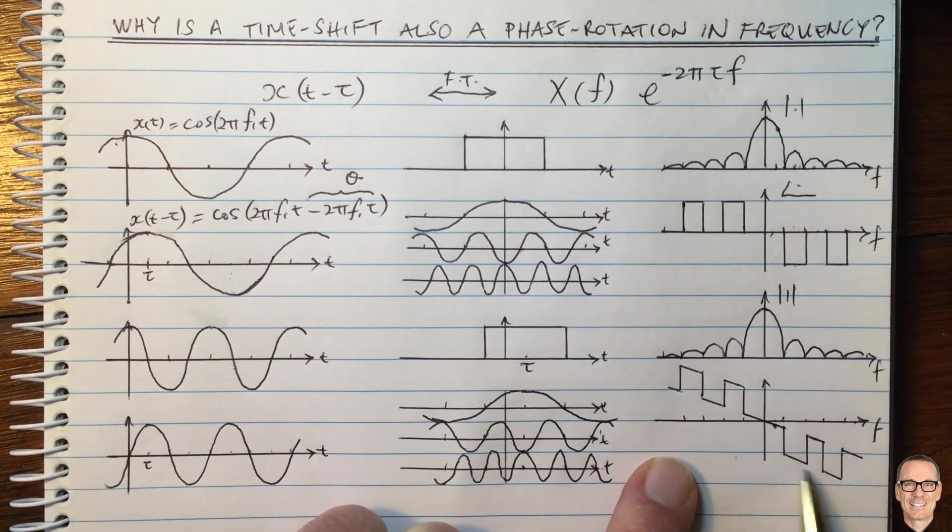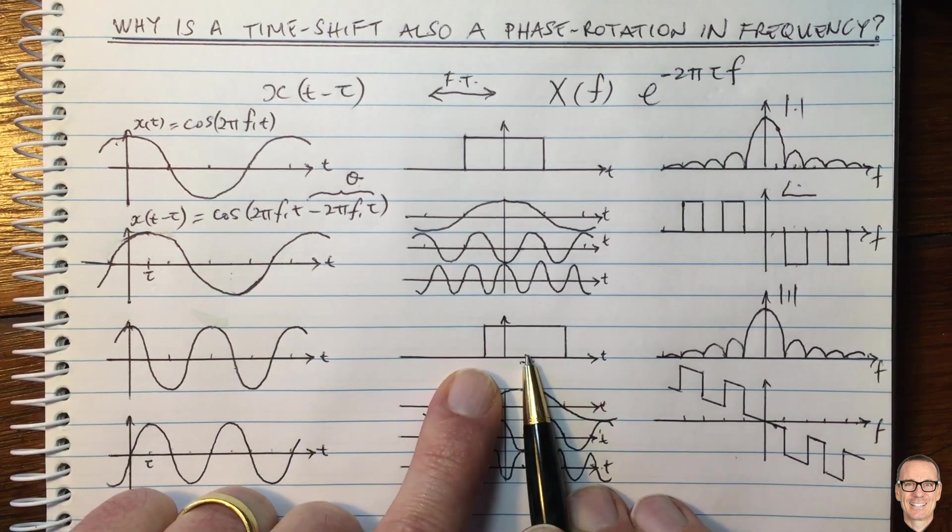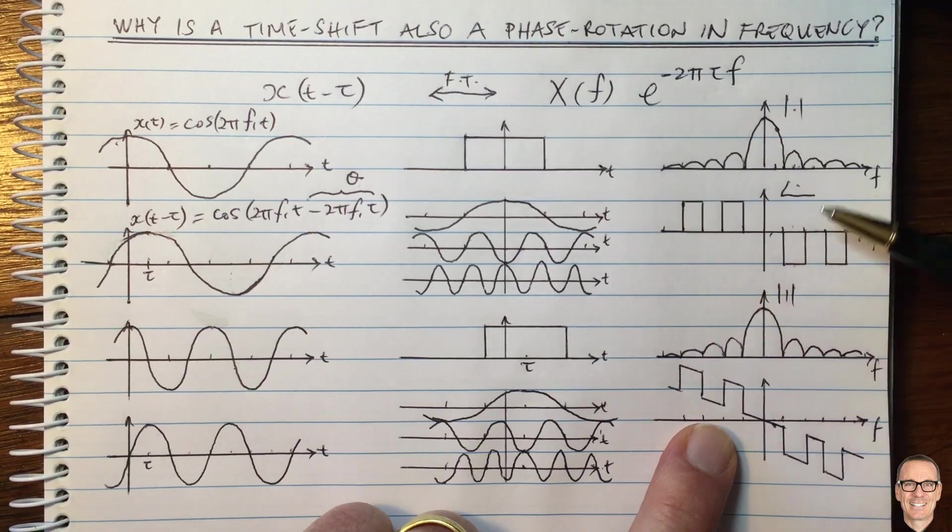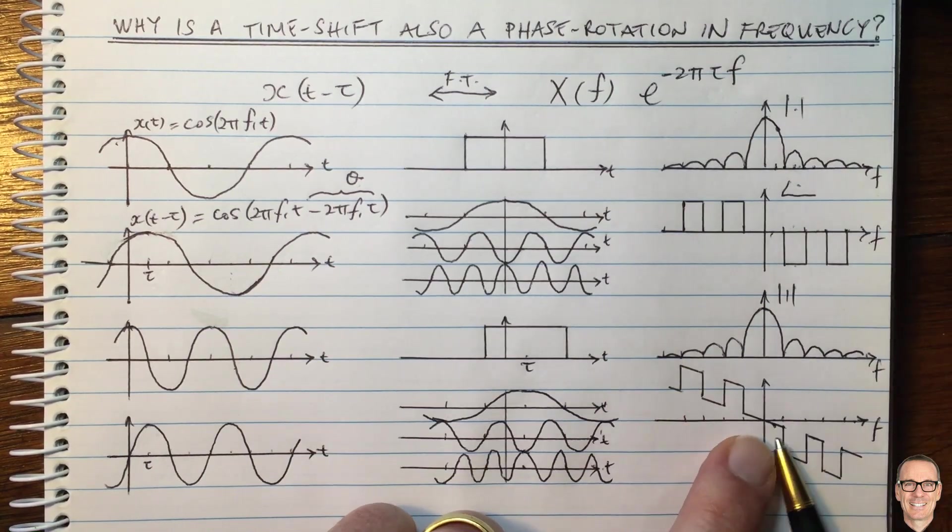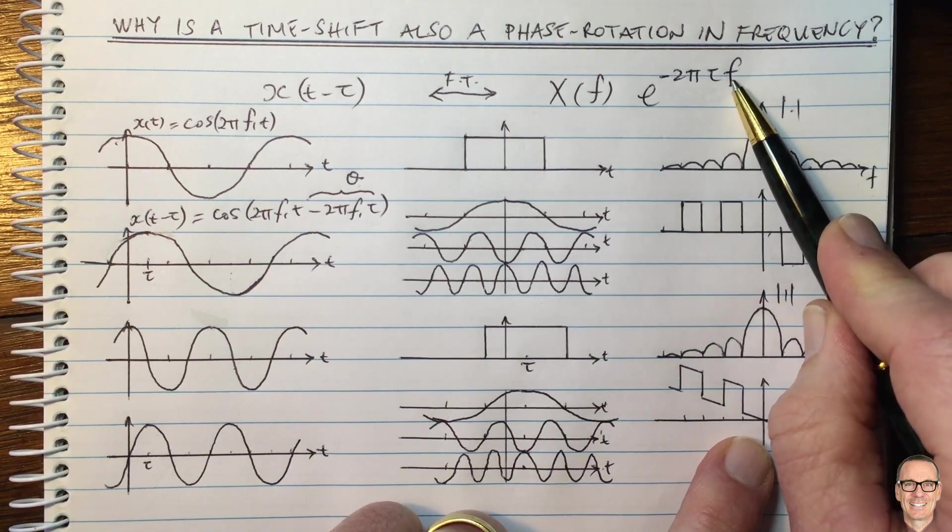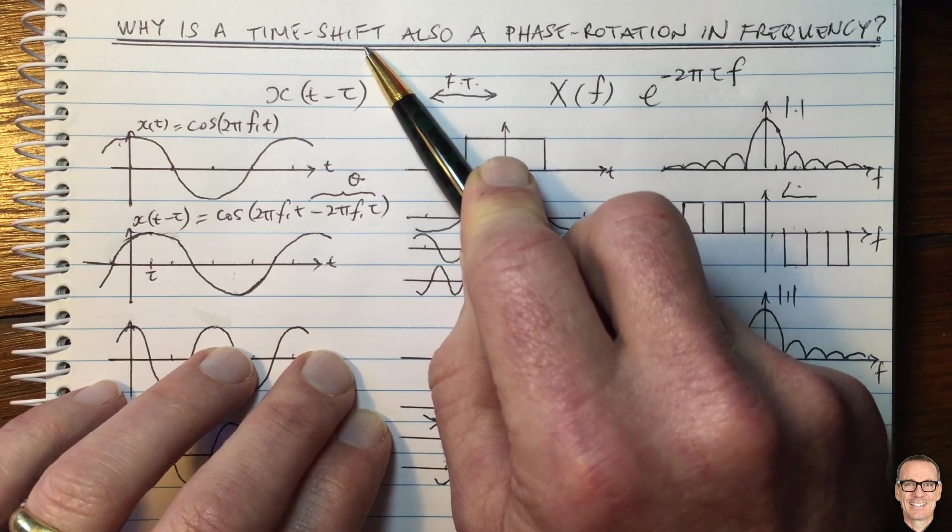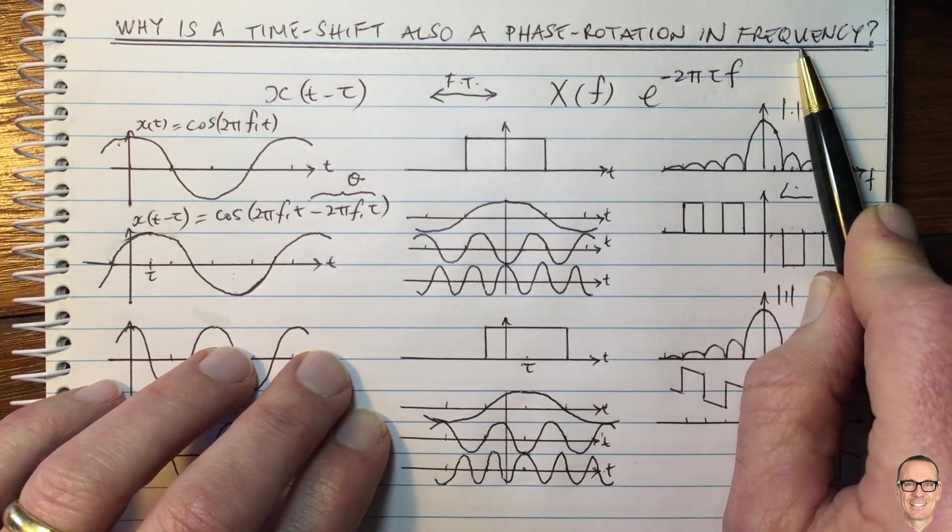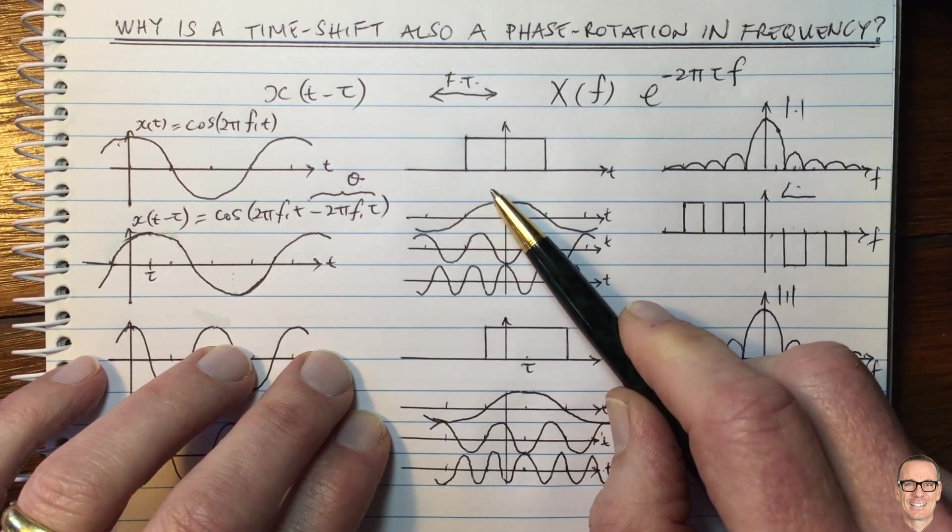So now I've plotted this phase function for this time shifted rect function. And you can see it matches with the phase of the non-time shifted function, but now where there's an extra phase, which is a function of the frequency. So hopefully this video has given you more insights into why a time shift in the time domain is the same as a phase rotation in the frequency domain for general signals. If it has, like the video helps others to find it.